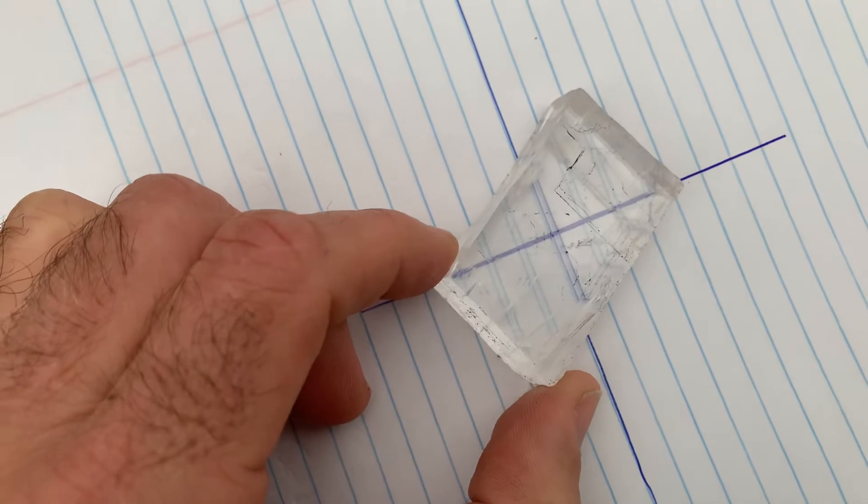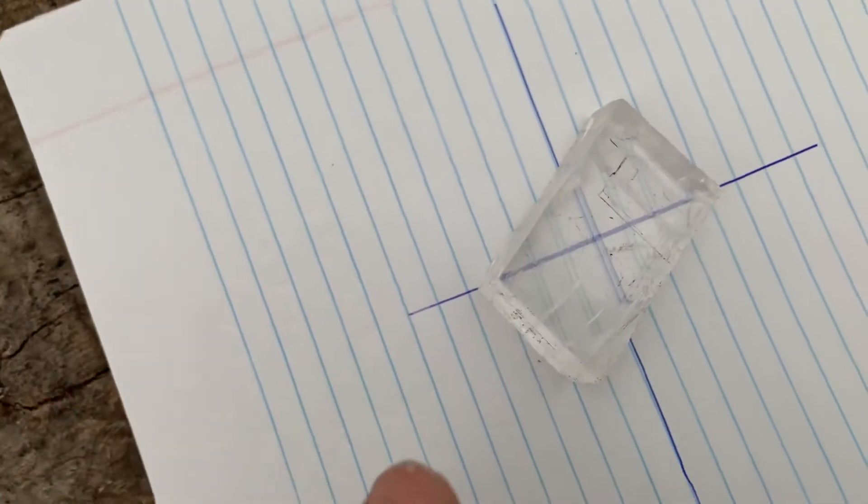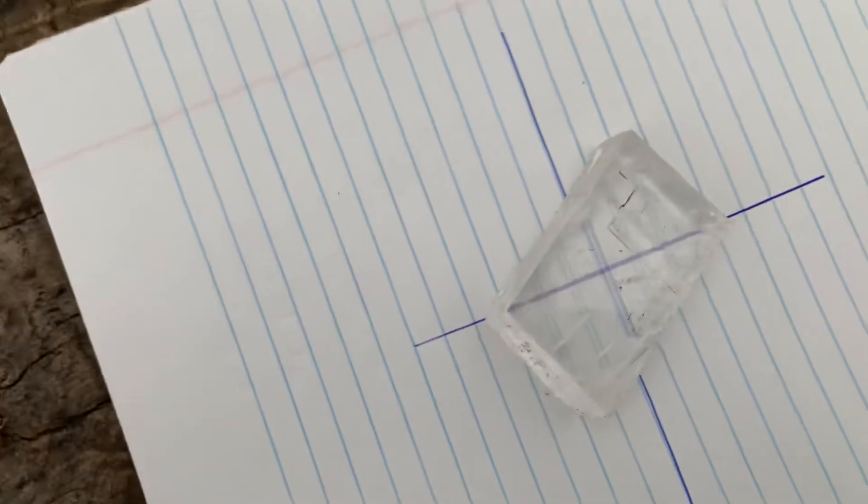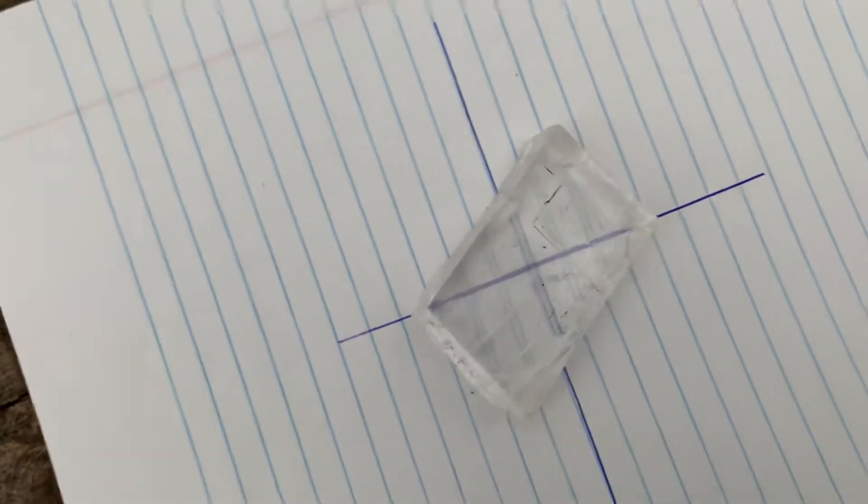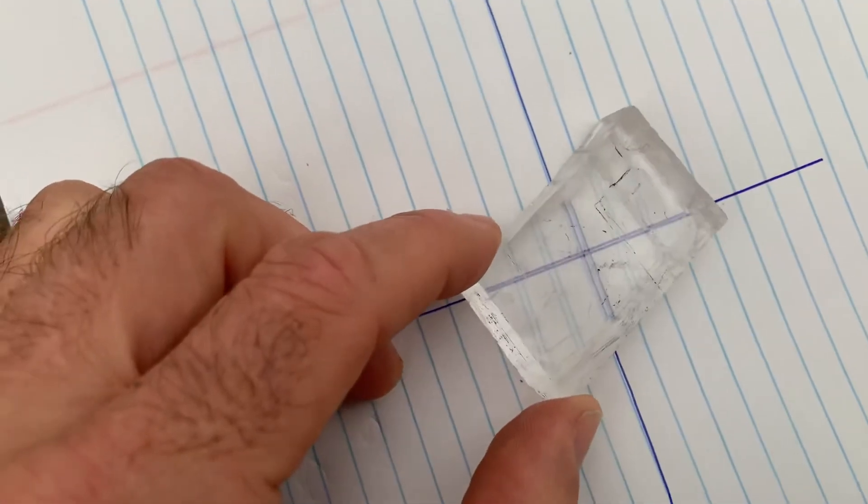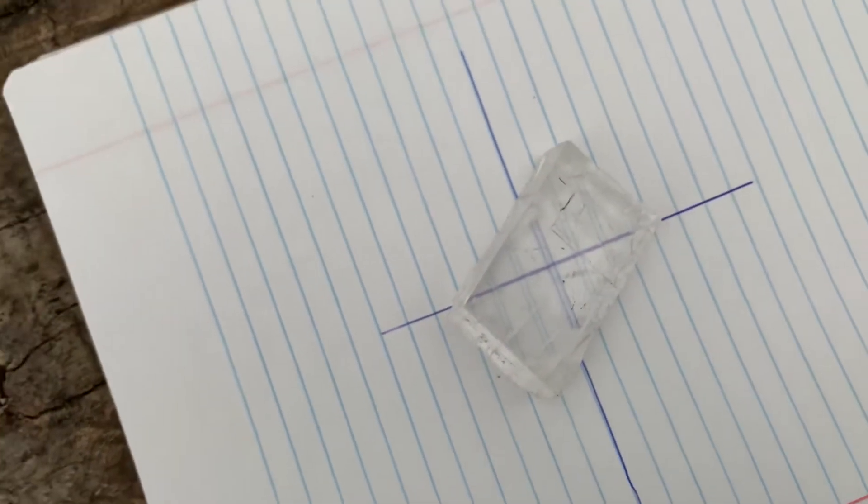Why I believe the Iceland spar, the sunstone, cannot be used with this method. Now there are other methods, like putting a dot—I believe that would work. I haven't fully tested all of those out, but this method I'm convinced would not be used for navigation. I'm going to show why.